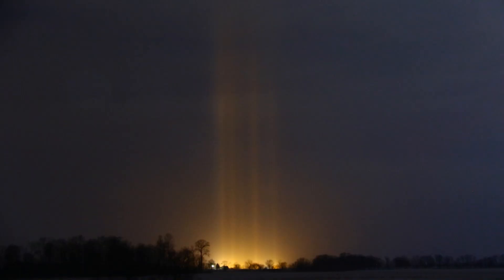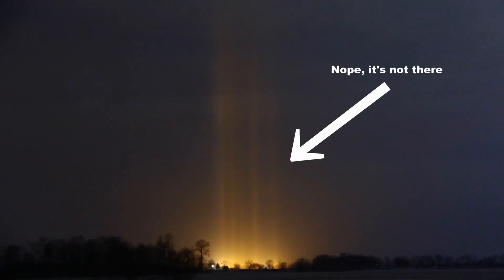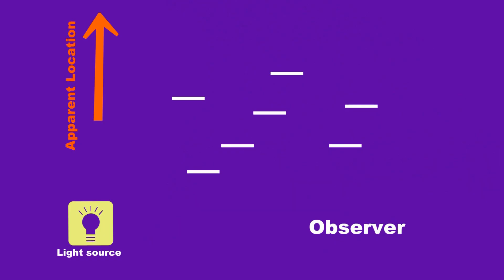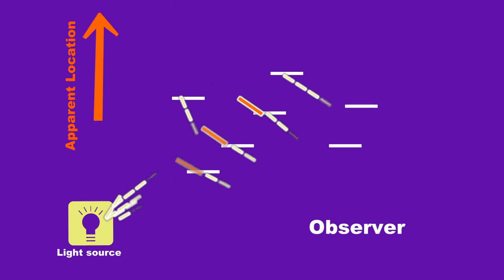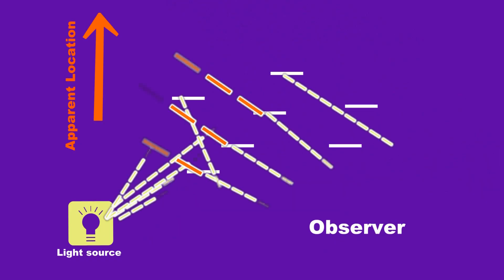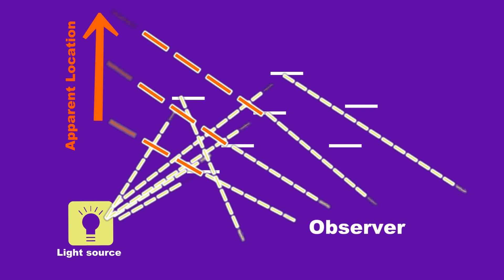But unlike a beam of light, a light pillar is not actually physically located above the light source. This is just an optical illusion resulting from the collective reflection off the ice crystals toward the viewer.